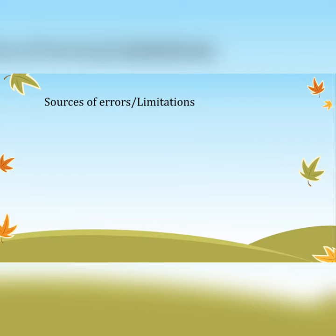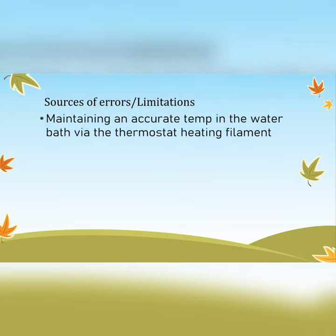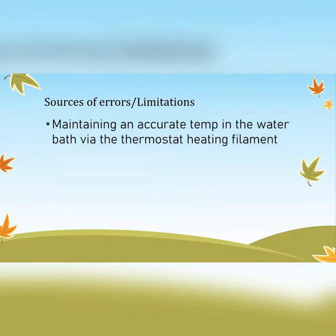For sources of errors and limitations — these two may be seen as interchangeable, and you can check my other video on sources of error, limitations, and assumptions. One source of error is maintaining an accurate temperature in the water bath via the thermostat and heating filament. The temperature could fluctuate — it may heat up and fall — and since you're measuring temperature you're hoping it remains constant, but that fluctuation could affect your experiment.